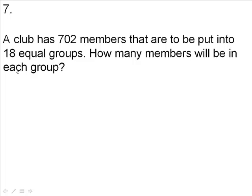So when you have 'each', you're either going to multiply these numbers or divide them. If you multiply 702 times 18, you're going to have a lot of groups — you'd have around 7,000 groups — but you only have 702 members. How are you going to put 702 members into 7,000 groups? You can't do it. So don't multiply 702 times 18.